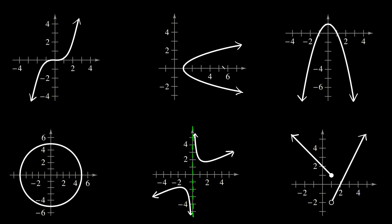Now what about this next example? We have a sideways parabola. If we draw a vertical line somewhere through this graph, you can see it intersects it at two or more points. So since we can draw a vertical line that intersects this graph at two or more points, that means this graph is not a function.